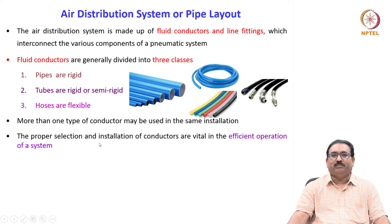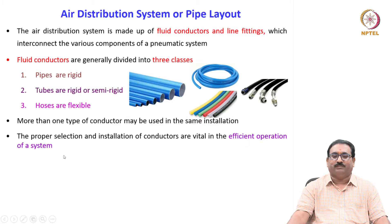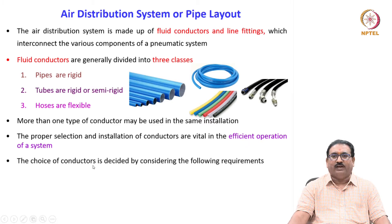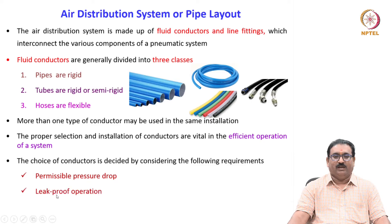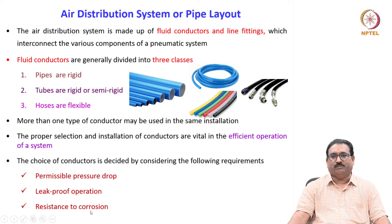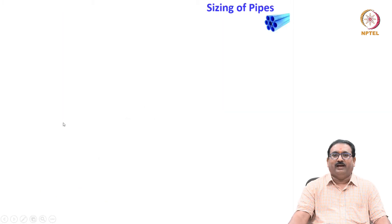The proper selection and installation of conductors are vital to the efficient operation of the system. The choice of conductor is decided by considering the following important requirements: permissible pressure drop, leak-proof operation, and resistance to corrosion. These are very essential while selecting pipes, tubes and hoses. Let us now look at sizing of pipes.